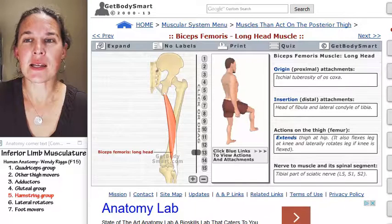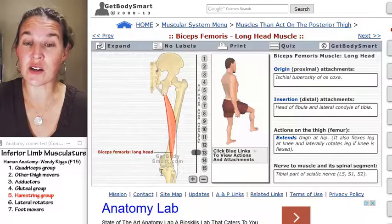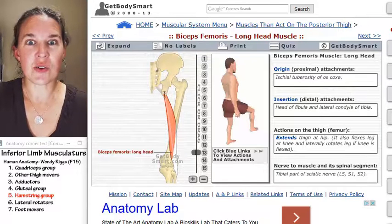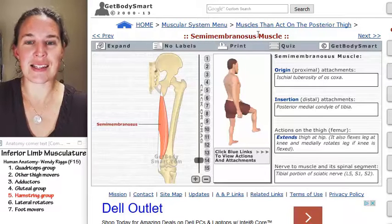How about semimembranosus? We're expecting semimembranosus to attach to the medial side over here and also to ischial tuberosity. So see if you can see that happen. Ready, go. Oh, nice.